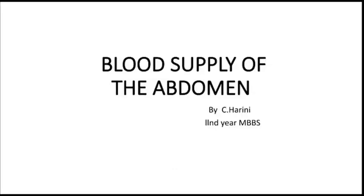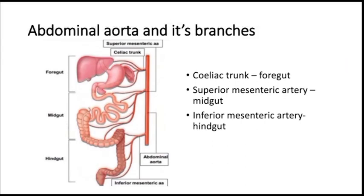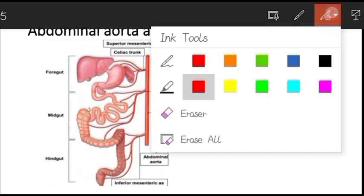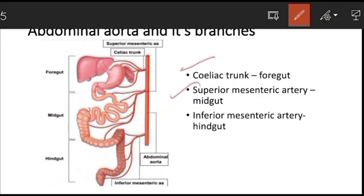Hello everyone, good morning. Today we are going to discuss the blood supply of the abdomen. This is a very important topic — if you know this concept, you'll be able to answer questions on the blood supply of the stomach, pancreas, duodenum, or any other abdominal organ. We will discuss the abdominal aorta and its three ventral branches: the celiac trunk, superior mesenteric artery, and inferior mesenteric artery. The celiac trunk supplies the foregut, the superior mesenteric artery supplies the midgut, and the inferior mesenteric artery supplies the hindgut.